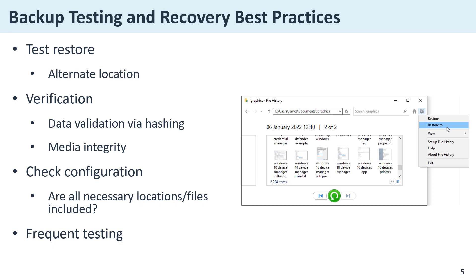Backup testing and recovery is crucial. You need to test the restore to an alternate location, just to make sure that the data is good. Data validation via hashing, for example, ensures that the data has not been tampered with, modified, or corrupted. If you have a hash of a backup and you compare that hash later on, and the value has not changed, it means the data is integral and most likely not corrupted — essentially proving media integrity.